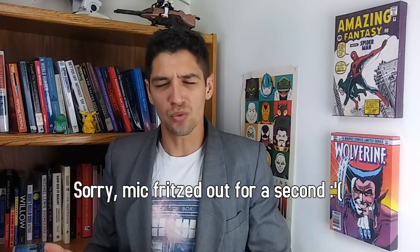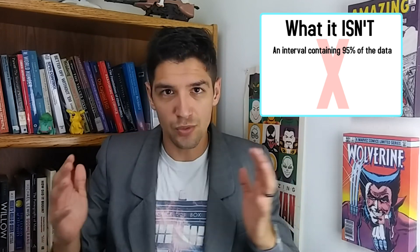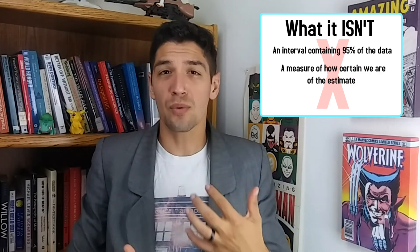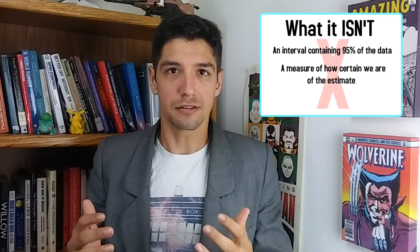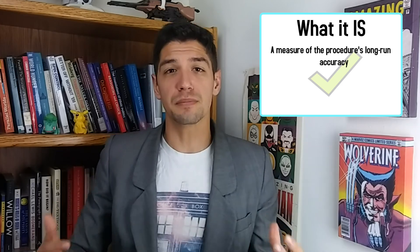Before we jump into that, I want to outline the conclusions now, because with stuff like this, how you get there is equally important as where you get. I want us to be on the same page with regards to the destination so you can appreciate the scenery en route. Here's what a 95% margin of error isn't: it isn't saying that 95% of the data is contained within that range, and it's definitely not saying that we're 95% sure that the number we're spouting is correct. What it is, is a measure of the procedure's accuracy in the long run. It allows you to say that 95% of the samples asking that question will have the population mean exist within those bounds.